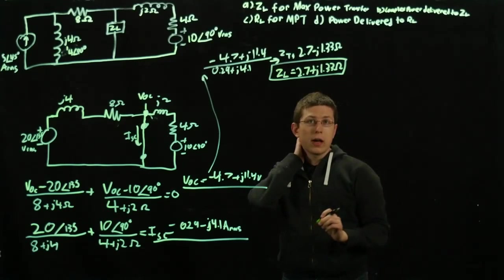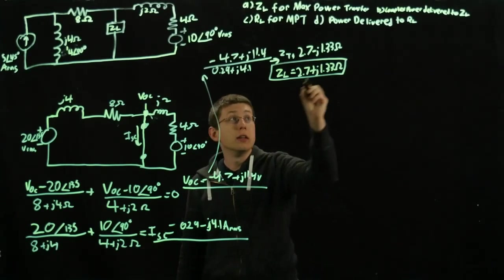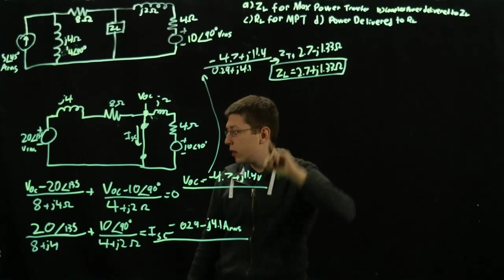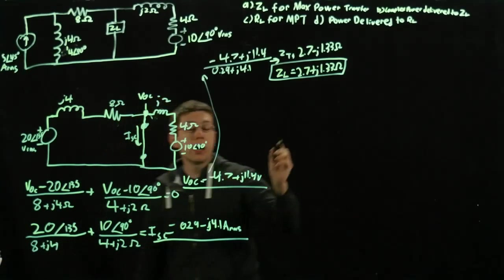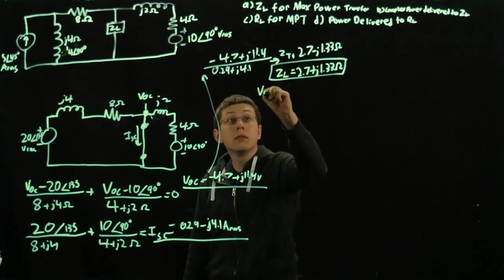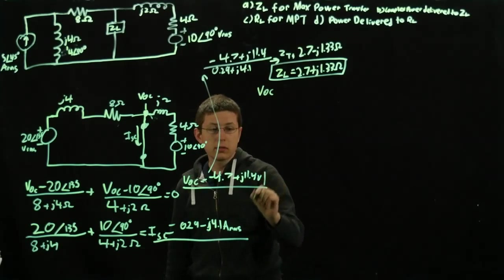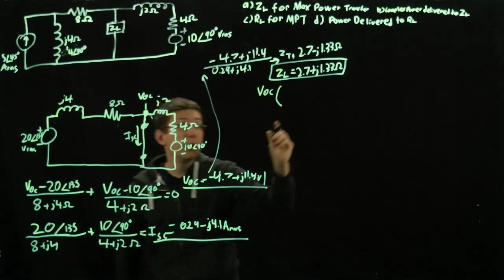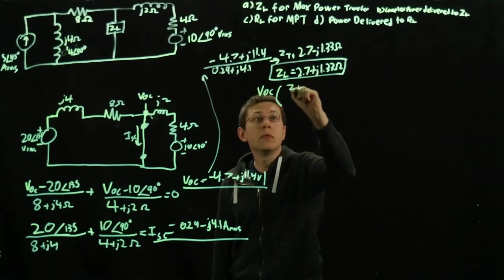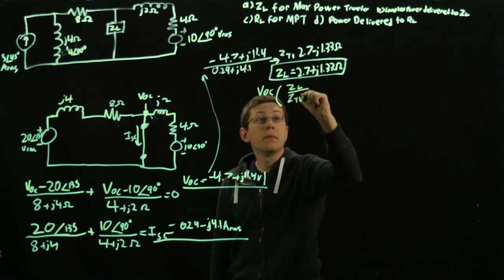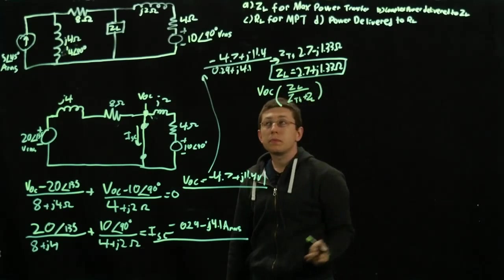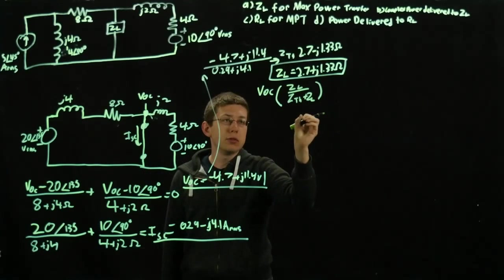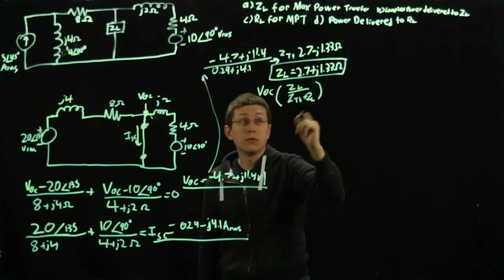Now for part B, we need to find VL and IL. VL is found using our Z Thevenin and our ZL. Our VL is found by our VOC times ZL over Z Thevenin plus ZL. The whole reason we're doing this is because the voltage at this node is a voltage divider. When we use a voltage divider, that'll give us the actual voltage VL.